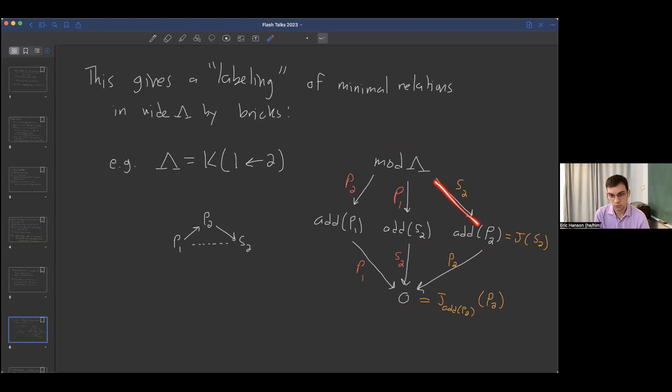If we look at this right path first, I labeled this inclusion by S2 because add of P2 is the tau perpendicular category of S2. To go down to the bottom, I labeled this by P2 because in this wide subcategory add of P2, we can take the tau perpendicular category of P2 and we get down to the bottom. The other labels here are determined analogously.